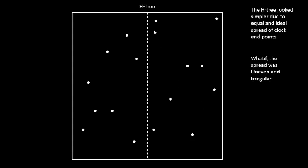So it will be something like this. You have the complete chip divided into two areas, two sections you can see. This section has got 1, 2, 3, 4, 5, 6, 7, 8 clock endpoints, and this one...